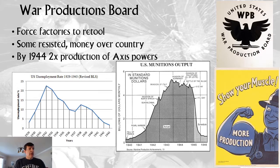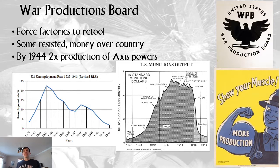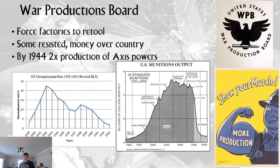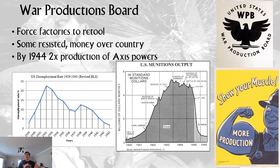By 1944, the US alone was producing twice the number of goods as all the Axis powers added up. Combined with the massive numbers of Soviet equipment, it was unbelievable. Britain also armed greatly. Japan was still a mix of medieval and modern. Germany never fully mobilized until 1942 and never reached peak production until 1944. This is somewhat misleading though — Germany was still a formidable producer.